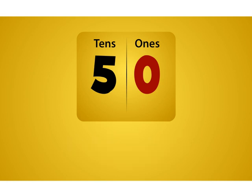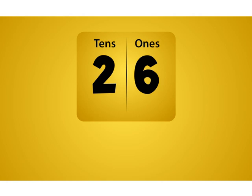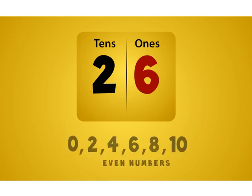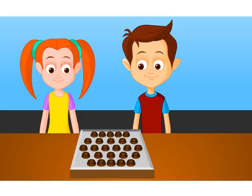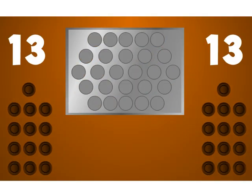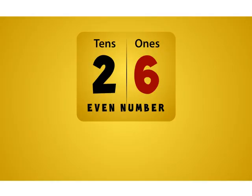The number in the ones place is zero, which is even. So 50 is also even. Now take the number 26 — look at the number in the ones place. It is 6. Since 6 is an even number, 26 is also an even number. Let us verify by dividing these 26 chocolates between Jack and Tina. Wonderful! We could divide the chocolates into pairs with no leftovers, so we verify that 26 is an even number.